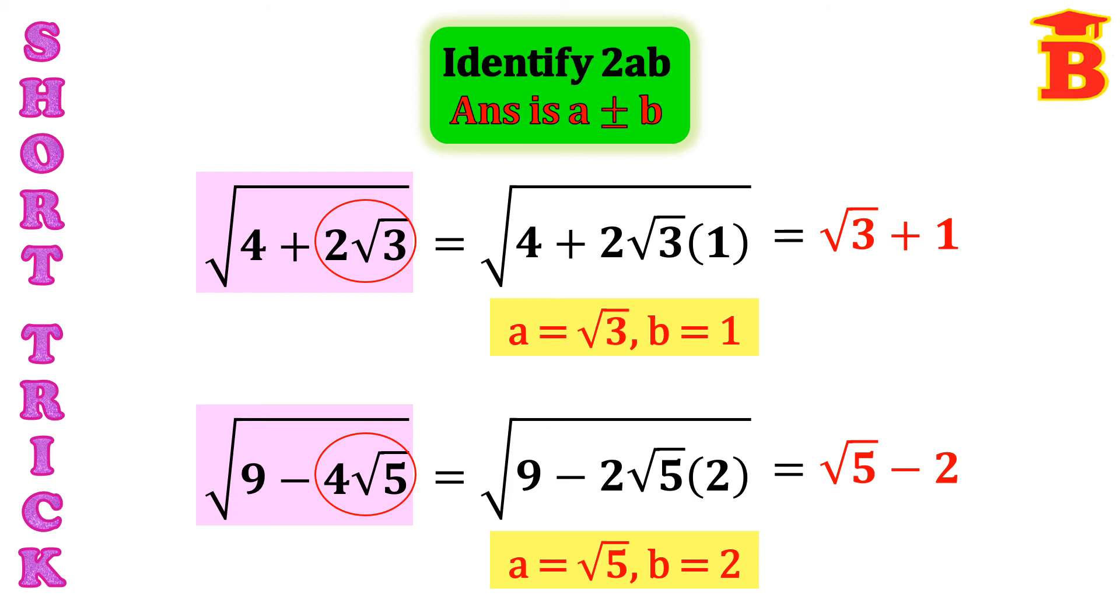And if we want, we can check the answer. This A square plus B square should be the another number. Root 5 square is 5 plus 2 squared is 4. 5 plus 4, 9. So, 9 is the another number here. Therefore, our answer is exactly correct.